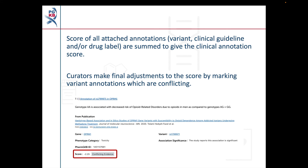At this point, PharmGKB scientific curators can adjust the score by tagging any conflicting variant annotations. Conflicting variant annotations are those which report an association in the opposite direction to the majority of evidence included in the clinical annotation. For example, one variant annotation reports that the AA genotype is associated with a decreased risk of developing opioid dependence. Variant annotations which have been tagged as conflicting display a conflicting evidence tag on the clinical annotation page.